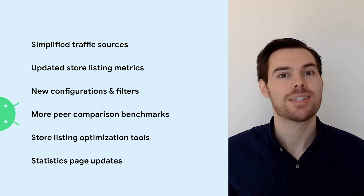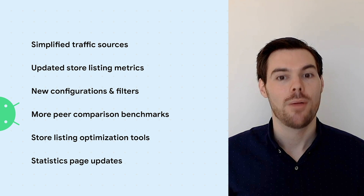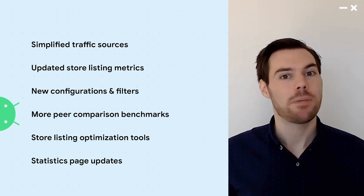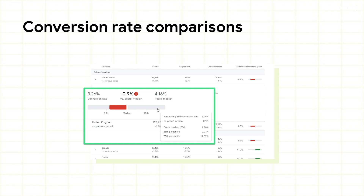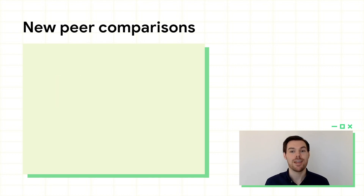We've heard that comparing your app's performance to similar apps is really helpful for finding new opportunities, which is why we'll be launching expanded peer comparison benchmarks soon. These comparisons highlight where your app store listing is doing better than your peers, and where you still have room for improvement, which is particularly useful when prioritizing which marketing strategies to employ next. We're happy to announce that we're extending peer comparison benchmarks in a number of ways. First, peer comparisons will be available for all traffic sources, including third-party referrals and your overall traffic.